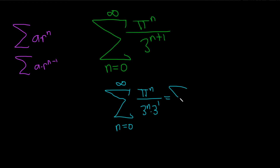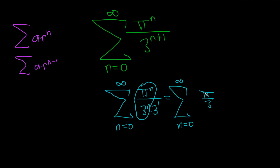So this is equal to the infinite sum as n runs from 0 to infinity. Now we can combine these two because they're both to the nth power, so this is pi over 3 to the n. And then this one on the bottom is 3, which we can pull out and write as one-third. Now it looks better — your a is one-third, and your r is now more clear: it's pi over 3.